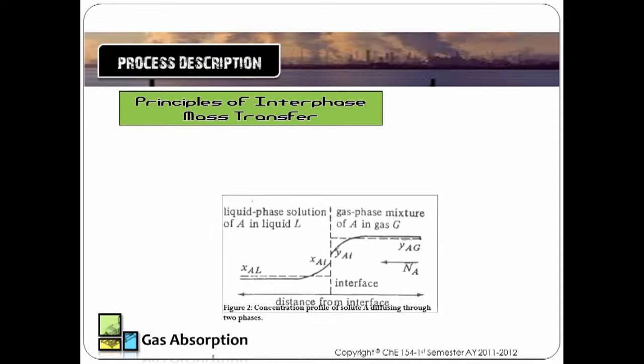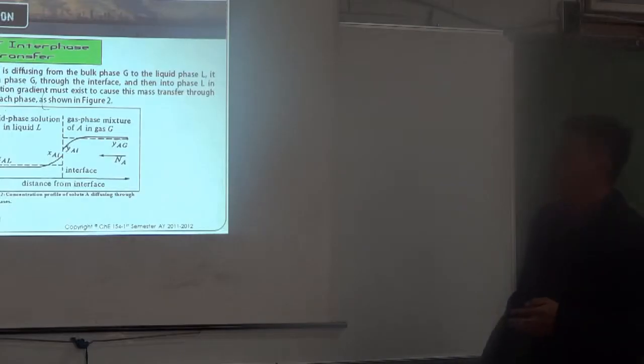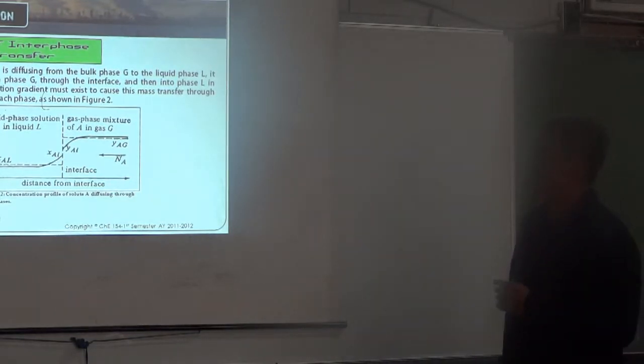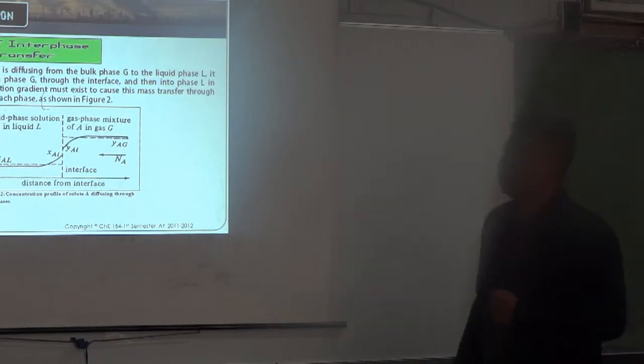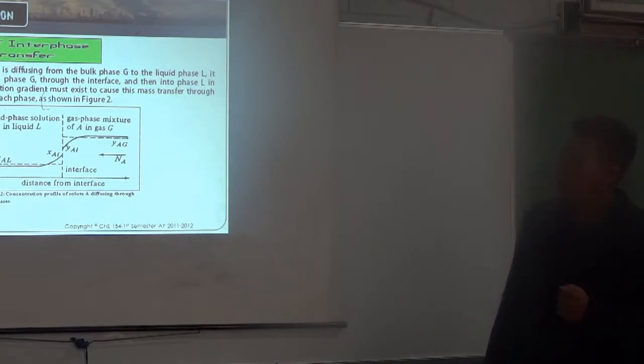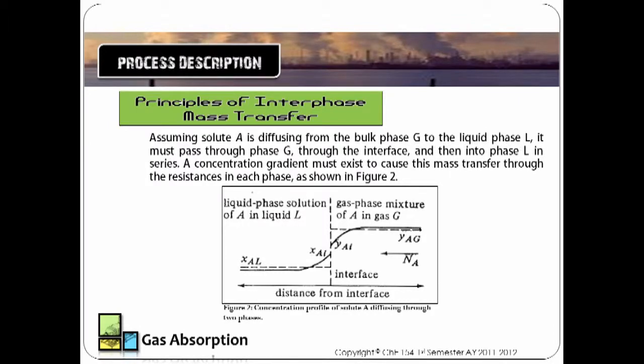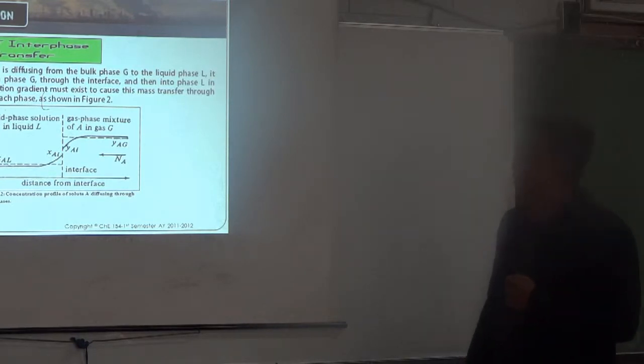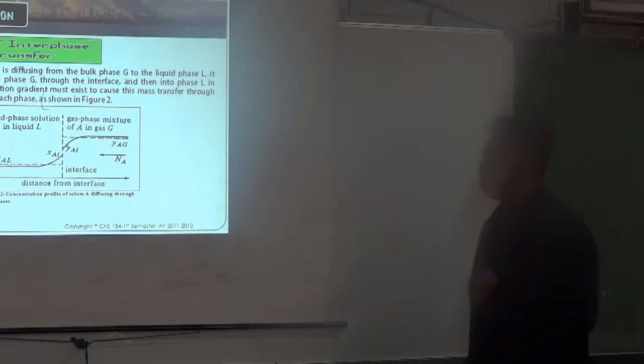For the principles of interface mass transfer, we will look into the interaction between the liquid and the gas in the interface. Assuming that solute is diffusing from the bulk phase G to the liquid phase L, it must pass through phase G, through the interface, and then into phase L in a series. Concentration regions must exist because of this mass transfer through the resistances within each phase, as shown in this figure.